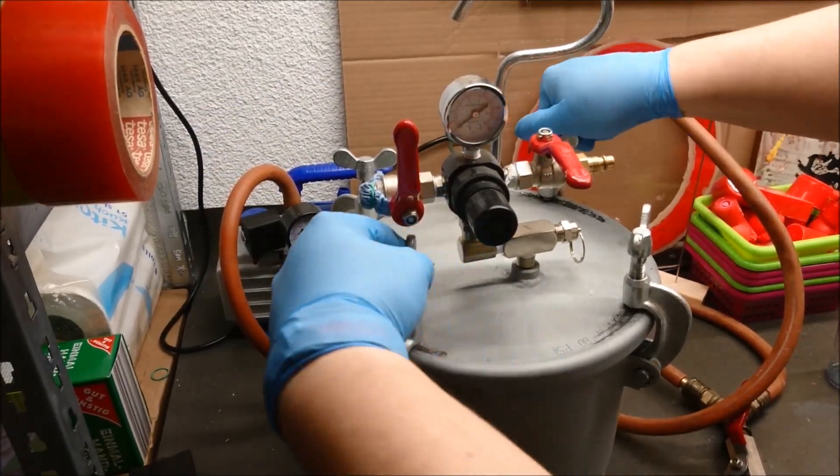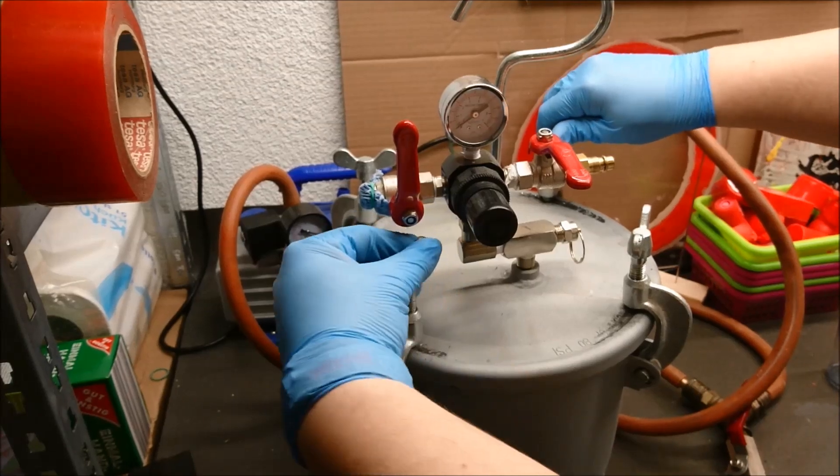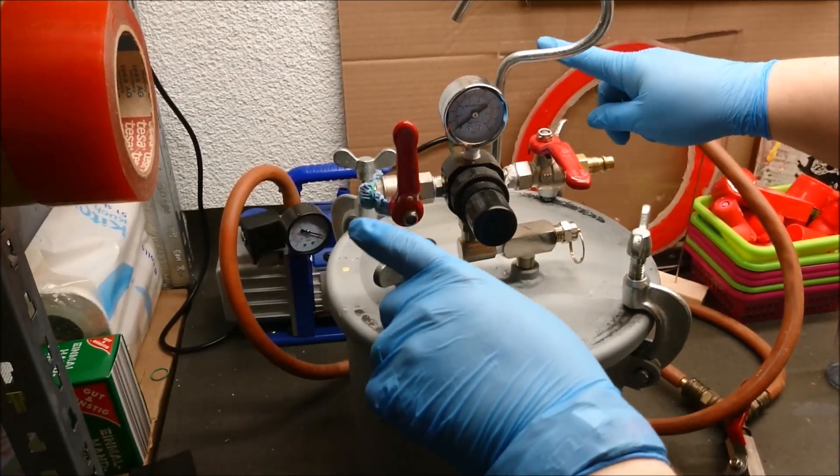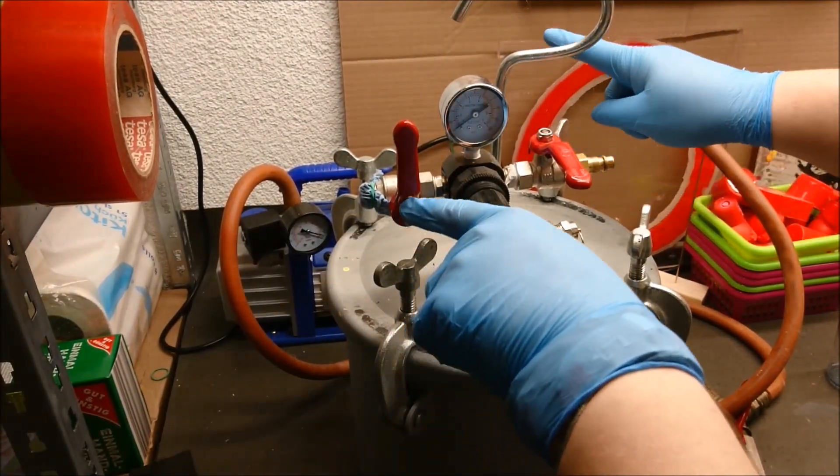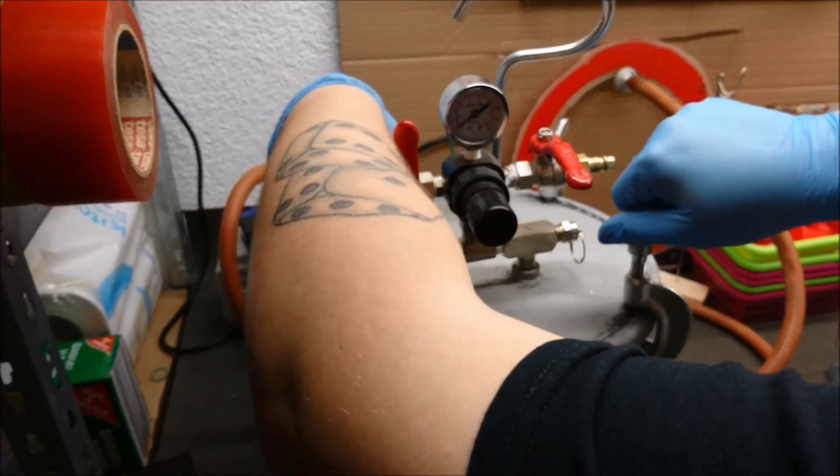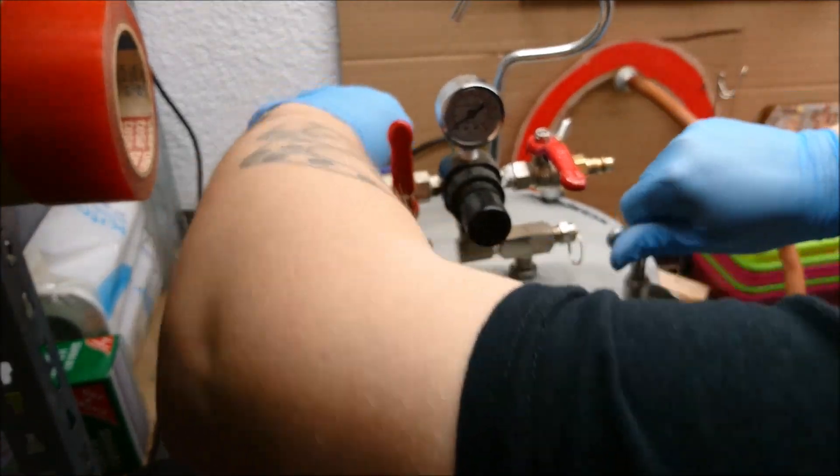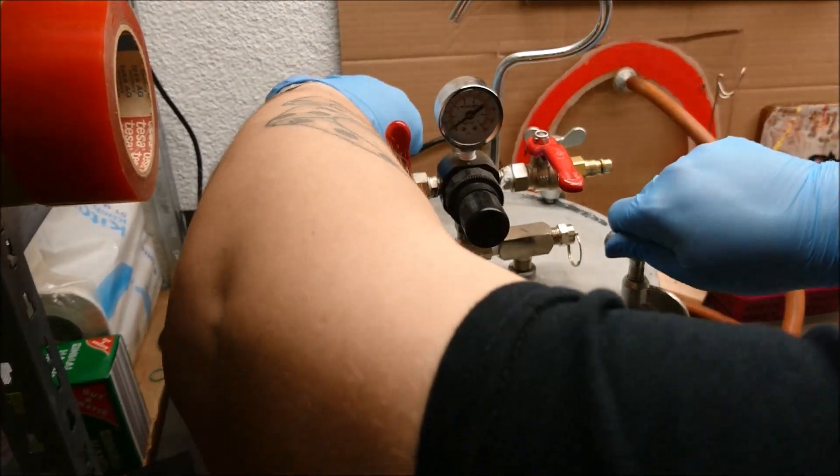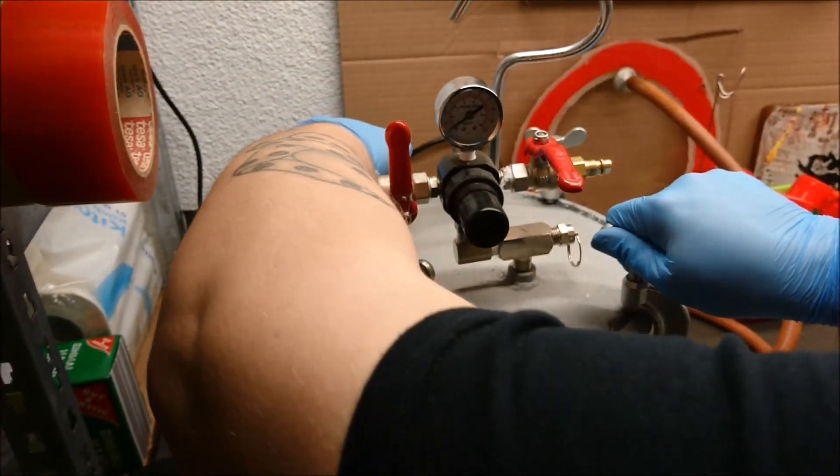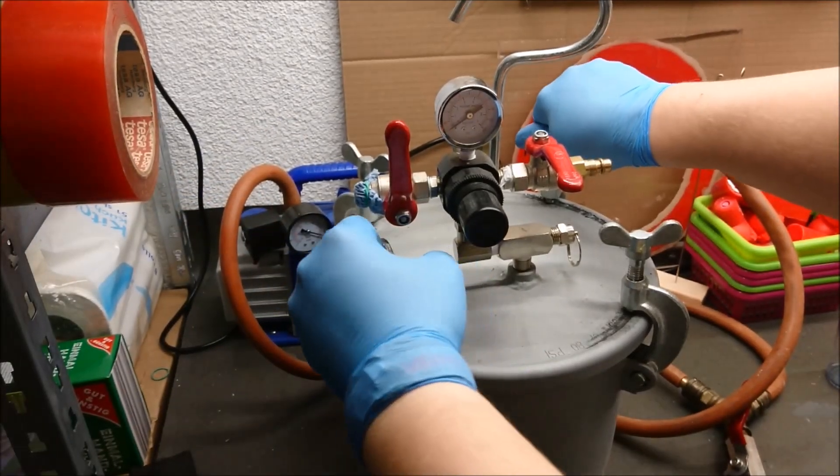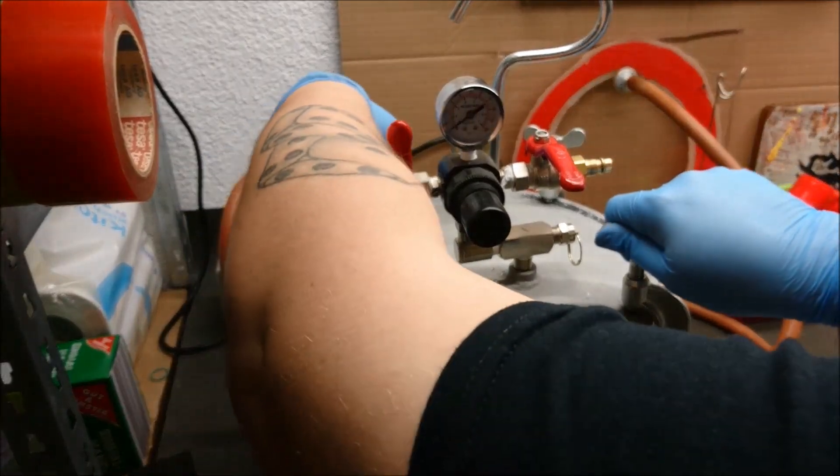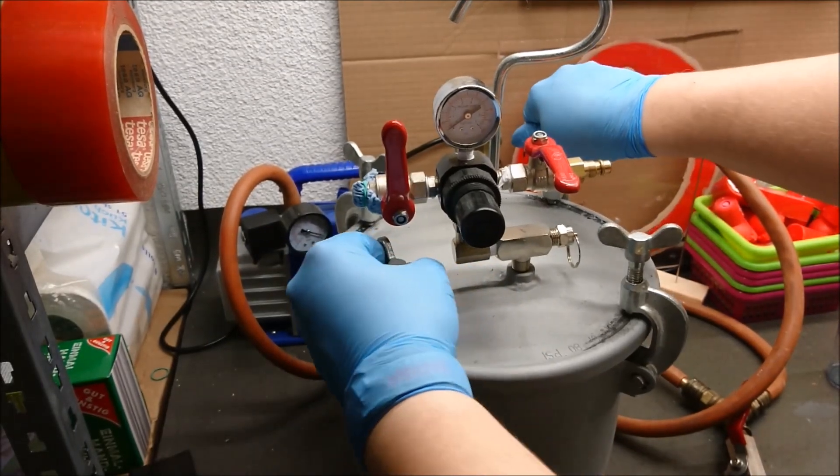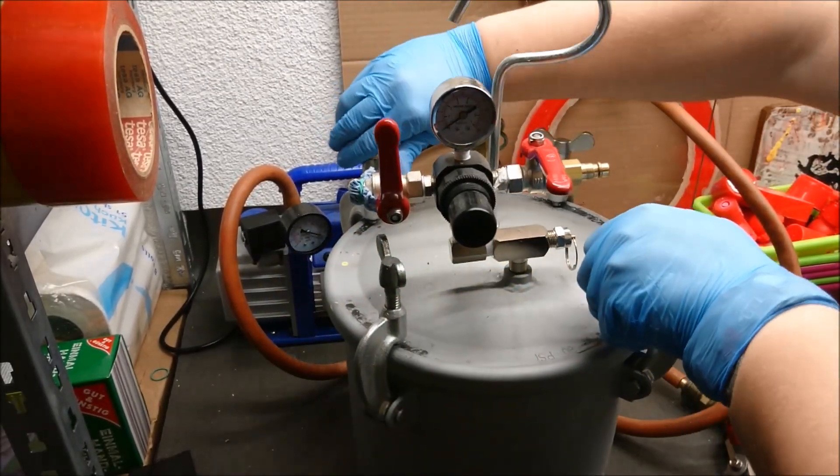When you close it, make sure that you screw crosswise, so always the opposite side. And then evenly step by step go from side to side to make sure you don't bend your lid. Even if it's that thick, you want to make sure not to bend it or have a lower spot in here.